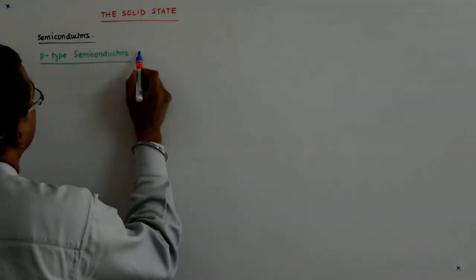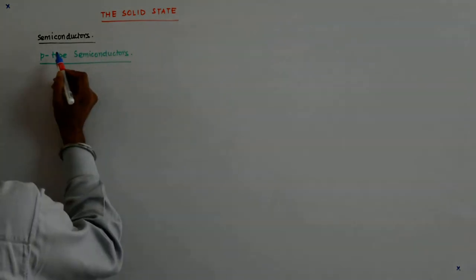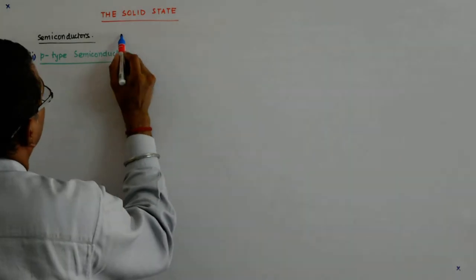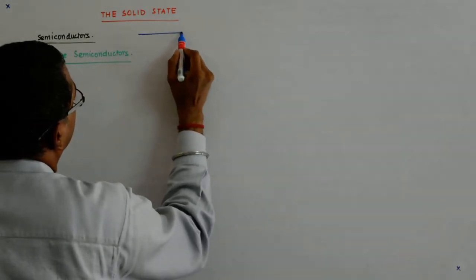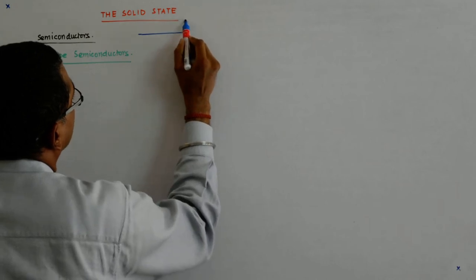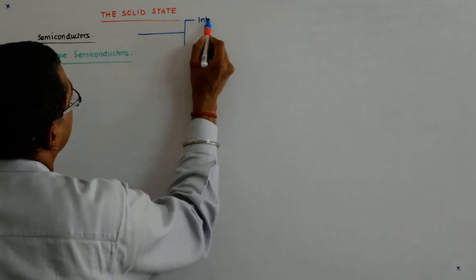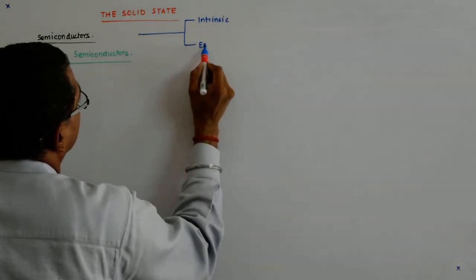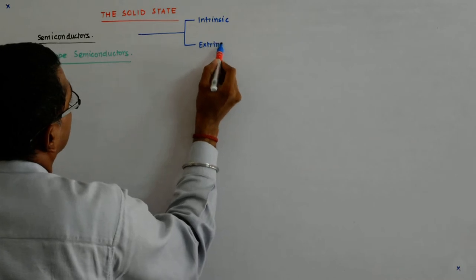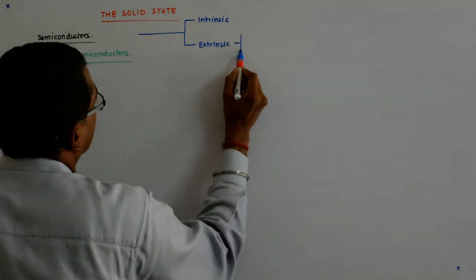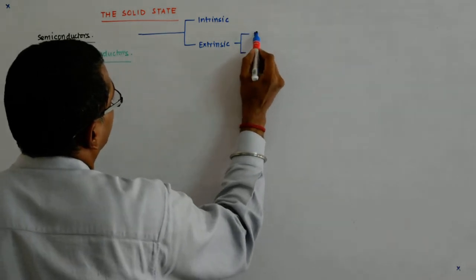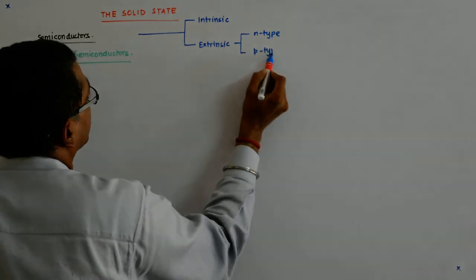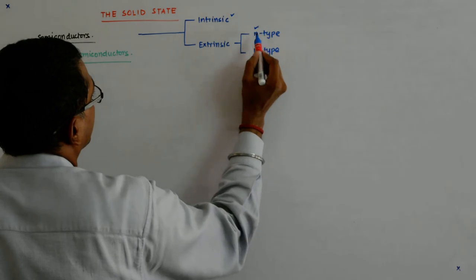This is the second type of extrinsic semiconductor. So we had seen till now, we have the intrinsic and extrinsic, correct? Then extrinsic is of two types: n-type and p-type. We have done this.